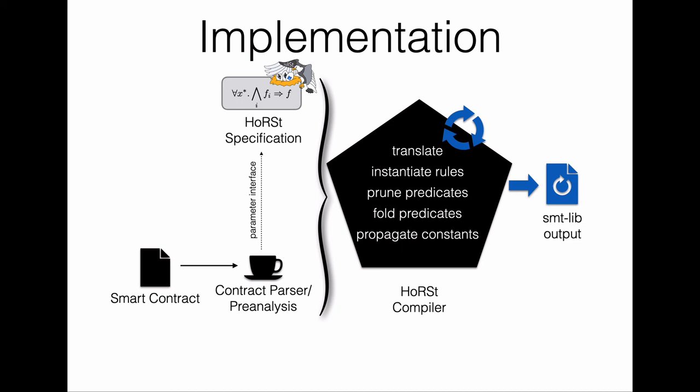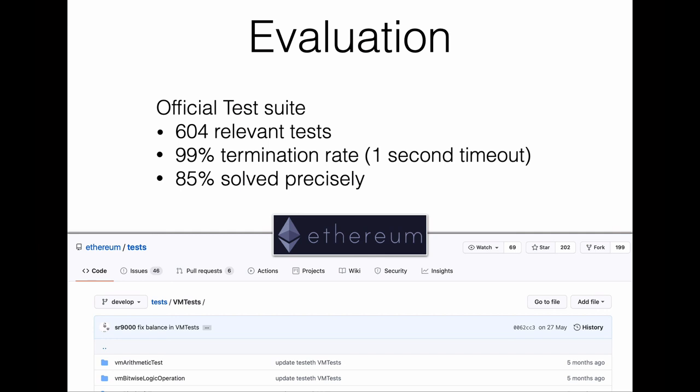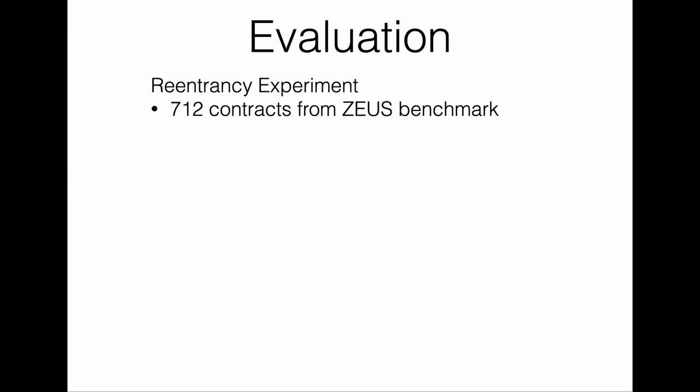How is the performance of ETHOR? As a first benchmark, we encoded all 604 relevant tests from the official Ethereum test suite. We solved 99% of these tests in less than one second, and in 85% we solved them precisely, meaning the abstraction derived was the most complete one. The large-scale experiment was conducted on the benchmark introduced with the Zeus tool. After removing duplicates, we are left with 720 contracts analyzed for reentrancy bugs. For 712 of these contracts, we were able to manually establish the ground truth according to our formal definition of reentrancy and evaluated ETHOR and Zeus against it.